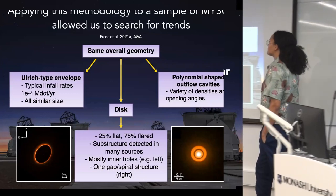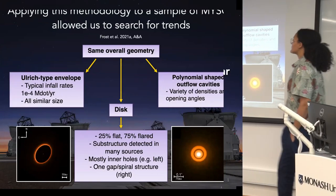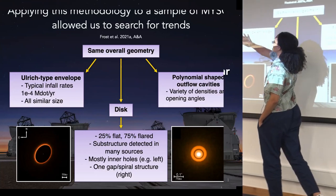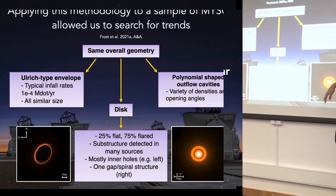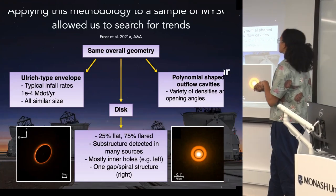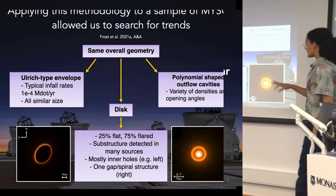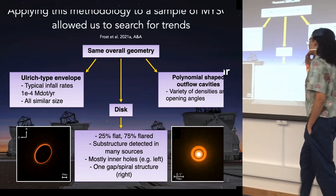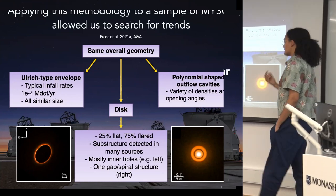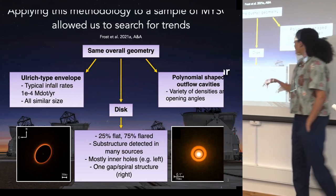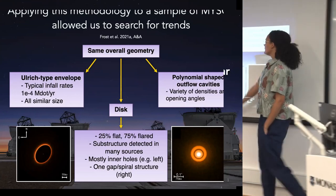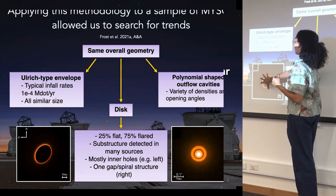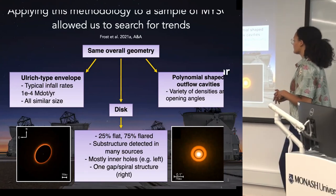I applied this methodology to a bunch of MYSOs and was able to look for some trends. They all had this disk-outflow-cavity-envelope geometry. All the envelopes were rotating and in-falling in an URIC type, with infall rates of around 10⁻⁴ solar masses per year. They all had similar shaped outflow cavities but with a variety of opening angles and densities. There was more variation in the disks — a mix of flat and flared disks. One thing that really piqued my interest was that I had to induce substructures into the radiative transfer images to satisfy the N-band visibilities. There were two main structures: a complex gap-like structure, and a receded inner rim, where material between the sublimation radius and that dust inner radius has been disturbed and something is removing it.